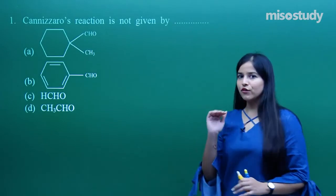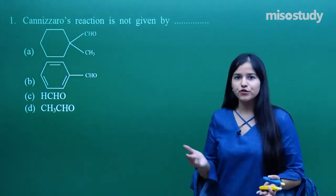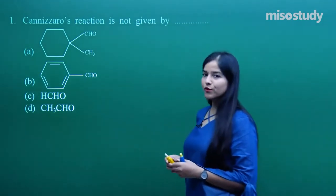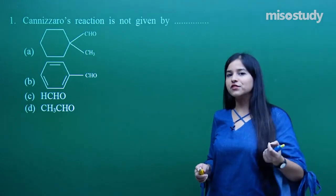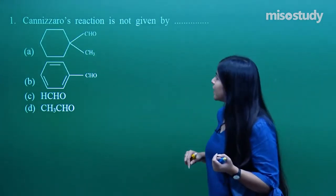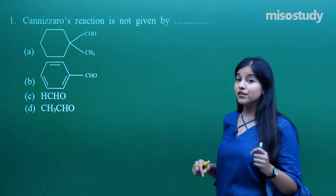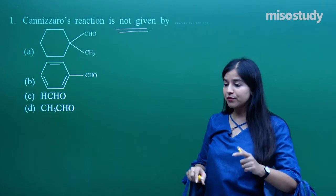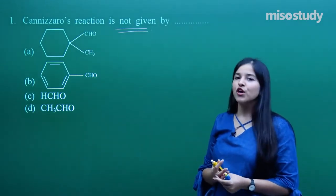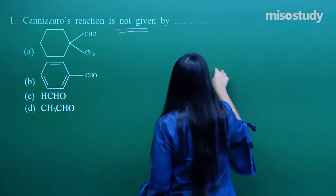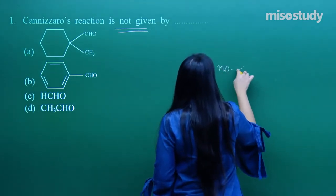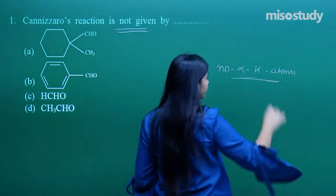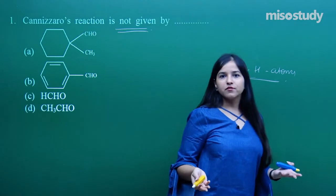We are dealing here at the level of CBSE, not IIT. The very first reaction given here is the Cannizzaro reaction. If you know what kind of compounds give it, you get the question. The question asks: Cannizzaro's reaction is NOT given by — please be careful, it says 'not given by.' That means out of 4, three are giving the Cannizzaro reaction. What is the condition for the Cannizzaro reaction? Those compounds having no alpha hydrogen atoms. What is alpha?